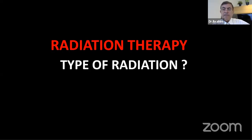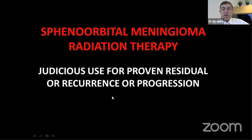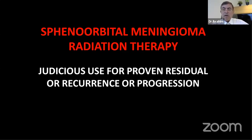The type of radiation varies between institutions: external beam, intensity-modulated radiotherapy, brachytherapy, proton beam, and gamma knife. The take-home message: judicious use of radiation for open residual or recurrence — not upfront. Surgeons without experience doing the surgery resort to radiation instead. They should be offering surgery first, and only give radiation if there is recurrence.